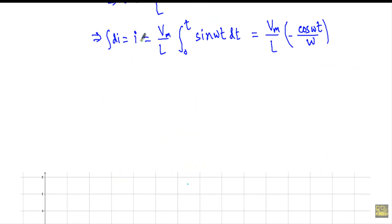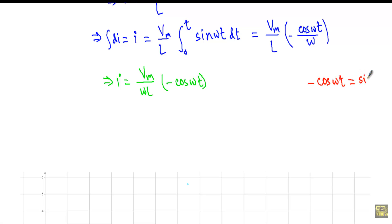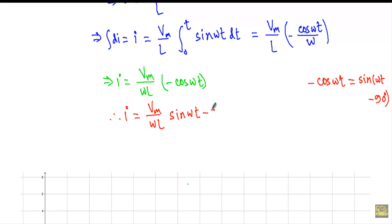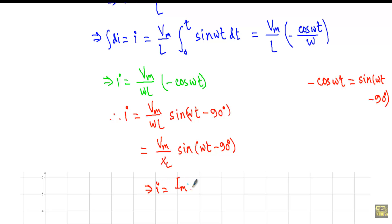I can write the alternating current I equal to Vm divided by omega L times minus cosine omega t. Using the trigonometric conversion, minus cosine omega t equals sine(omega t minus 90 degrees). So I can write the alternating current I equal to Vm divided by omega L times sine(omega t minus 90 degrees). Here, omega L is denoted as XL, the inductive reactance.